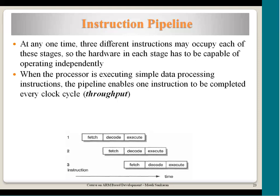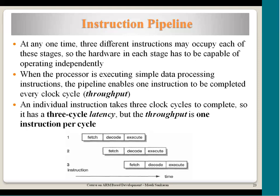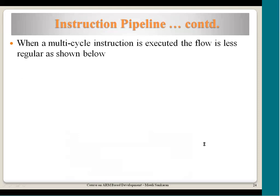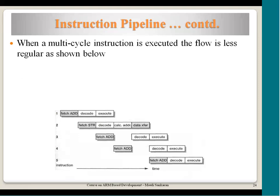For simple data processing operations, one instruction completes every clock cycle. The latency is 3 clock cycles — the time for one instruction to traverse all pipeline stages. When a multi-cycle instruction is executed, the flow becomes less regular. A multi-cycle instruction — such as one that performs sequential memory access, copying multiple register values to consecutive memory locations — extends the execution phase.